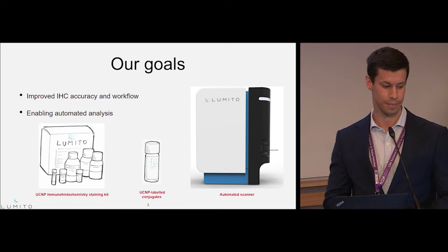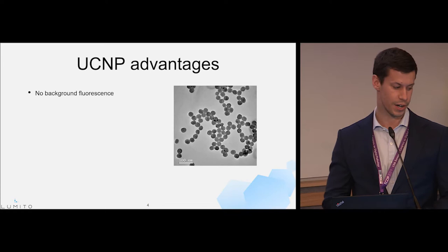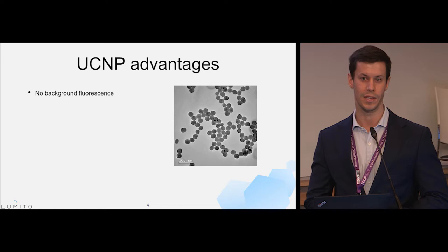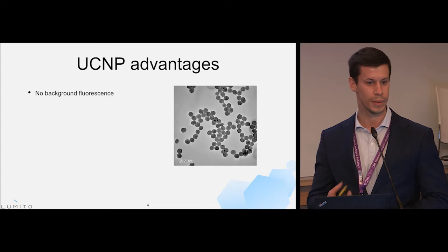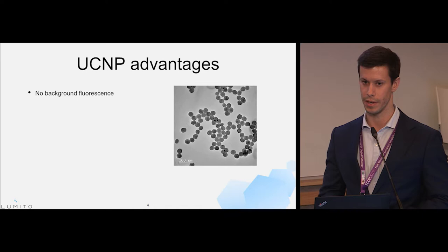Some of the main advantages of UCMPs are no background fluorescence. This is because they are characterized by the anti-Stokes effect, where the excitation wavelength is completely different from the emission wavelength. So there is no background fluorescence in this case.